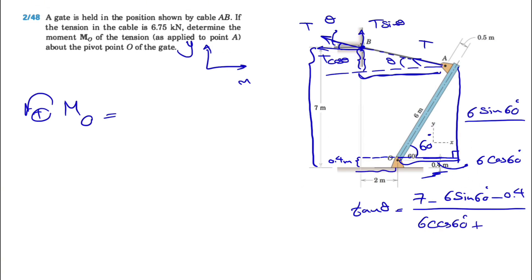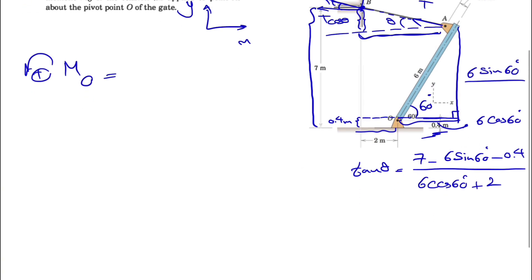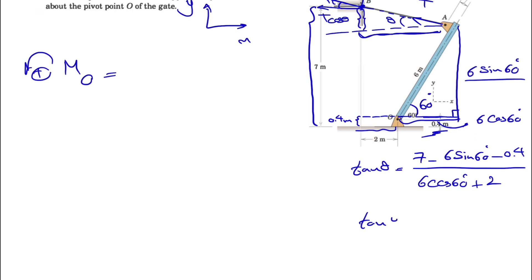Our tangent of theta would be - if we calculate the numerator we get 1.4, and we have 3 plus 2 in the denominator, or 5. From here we can find theta: tangent inverse of 1.4 over 5, which will be 15.6 degrees.